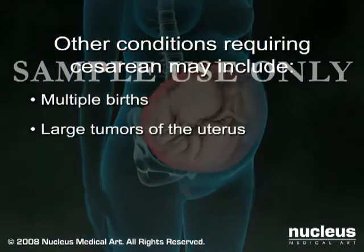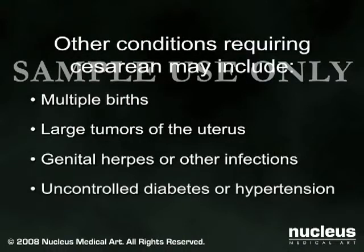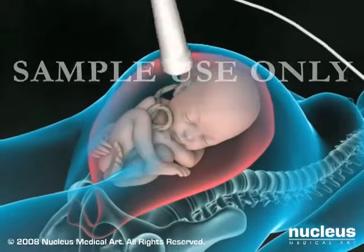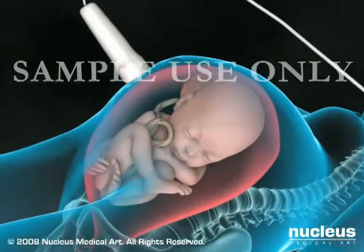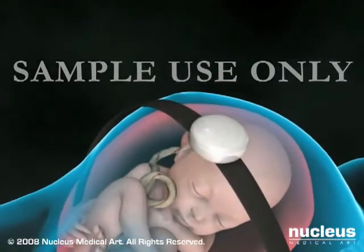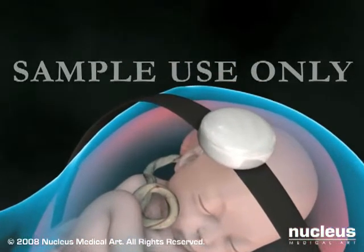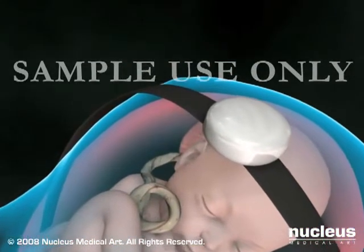Other conditions that may require a cesarean section include multiple births, large tumors of the uterus, genital herpes or other infections, or medical problems such as uncontrolled diabetes or hypertension. Your doctor may use ultrasound testing and a fetal heart monitor to help decide whether your baby should be delivered by cesarean.